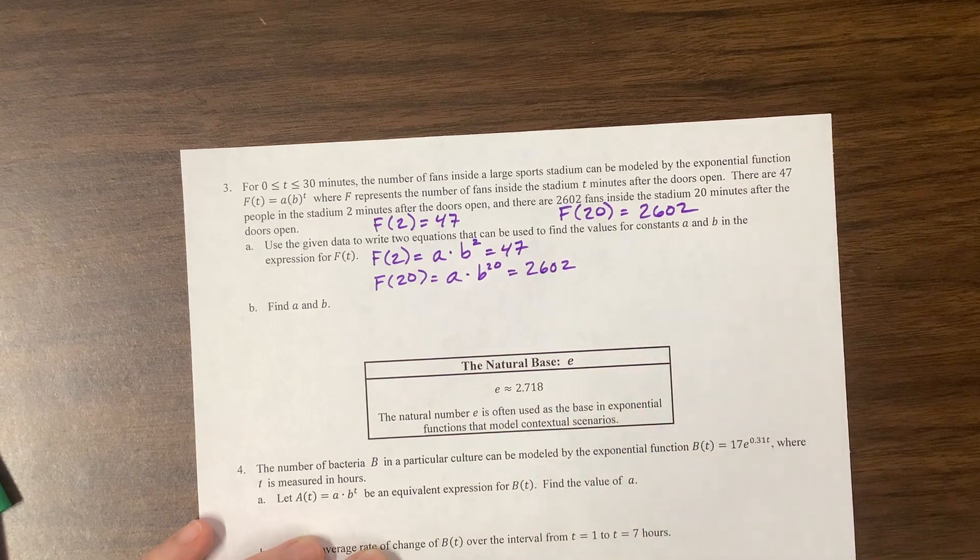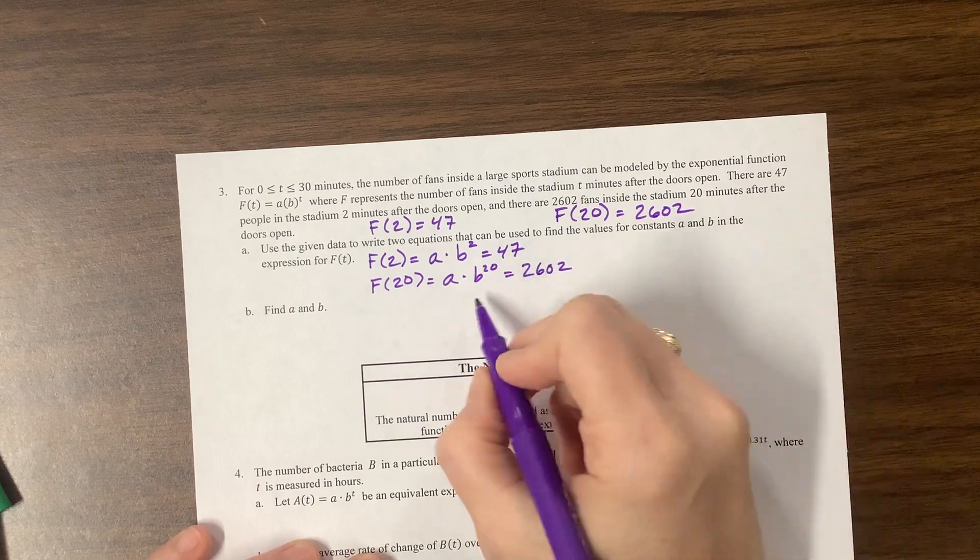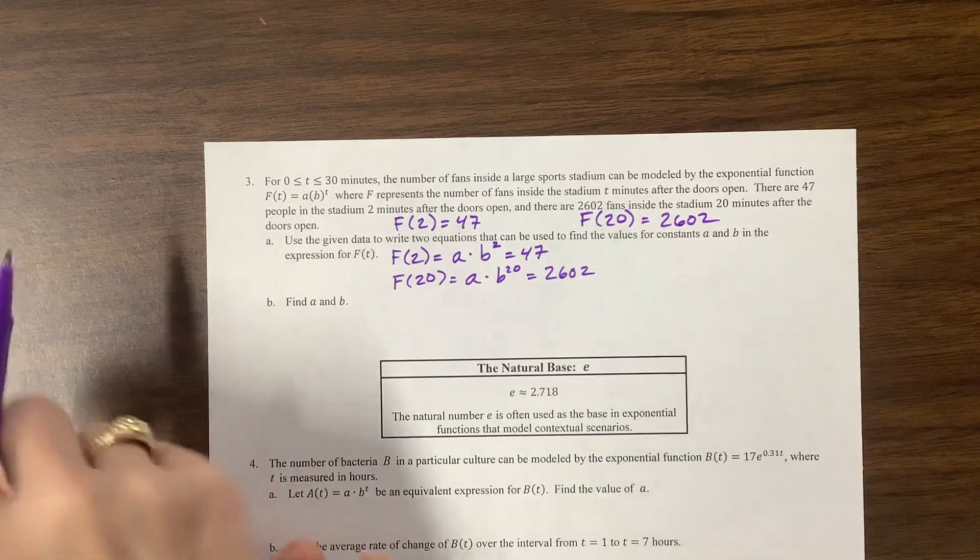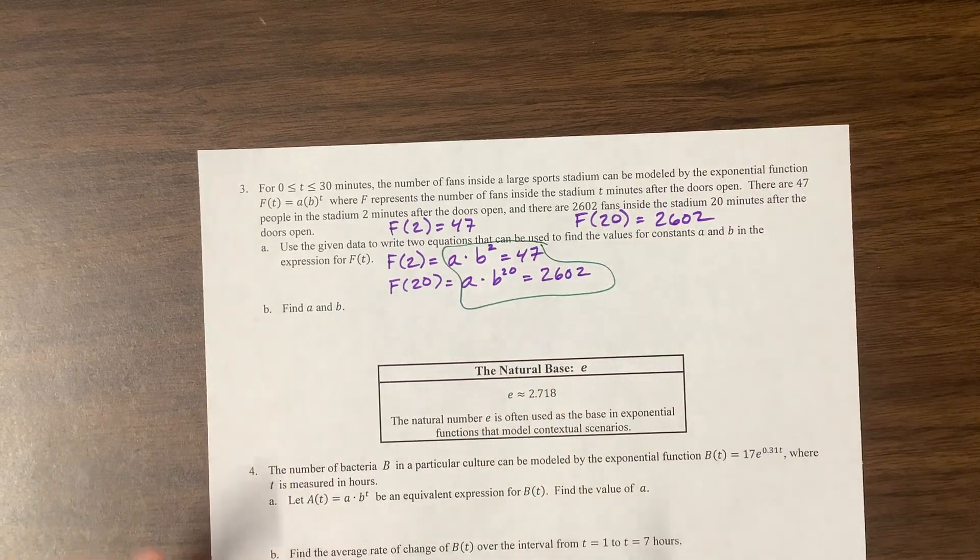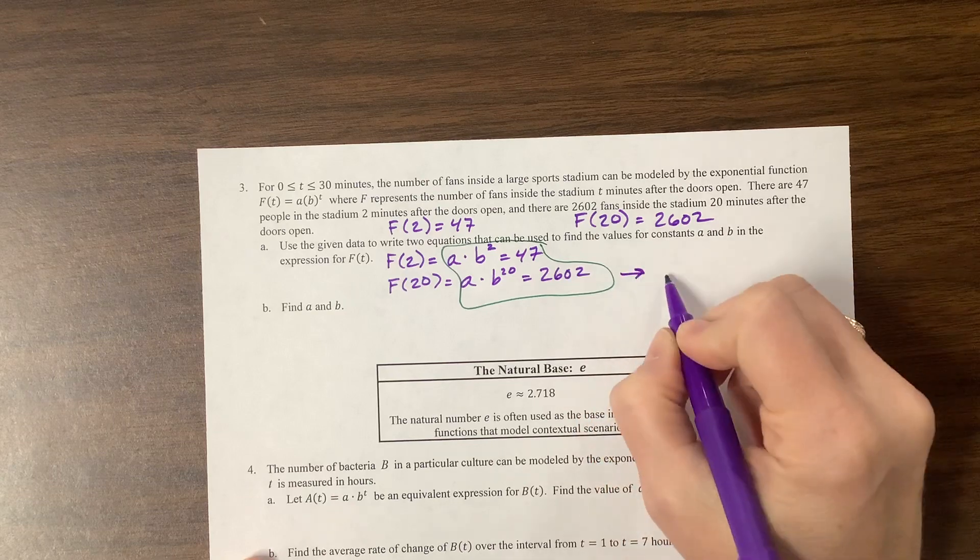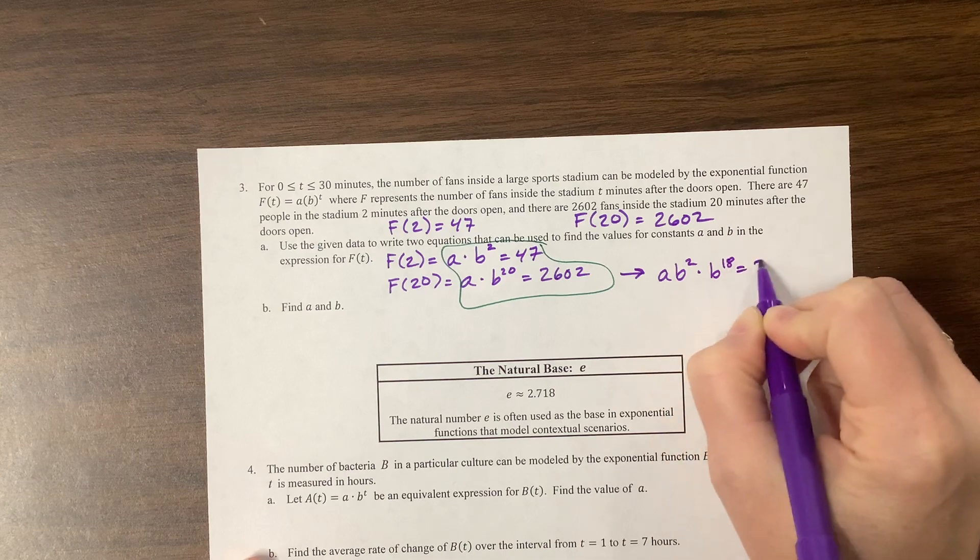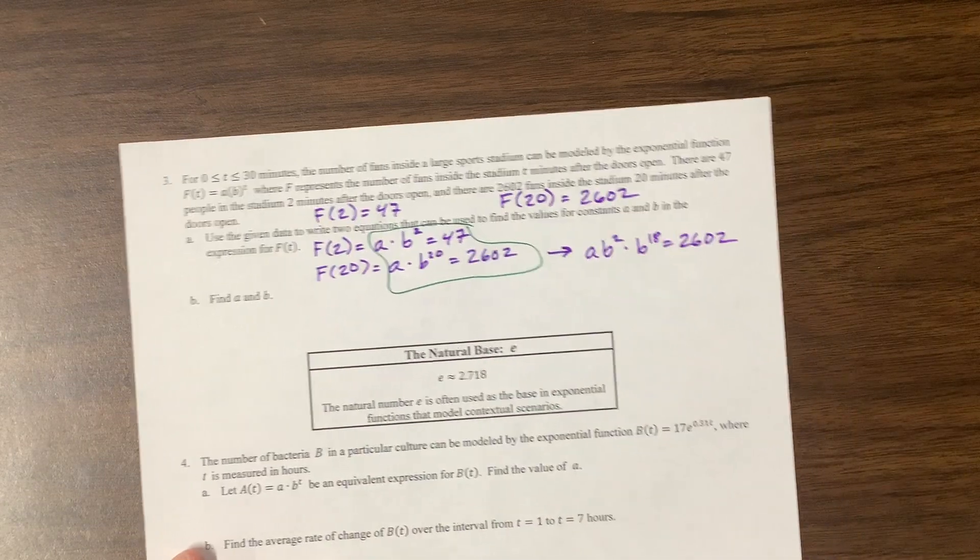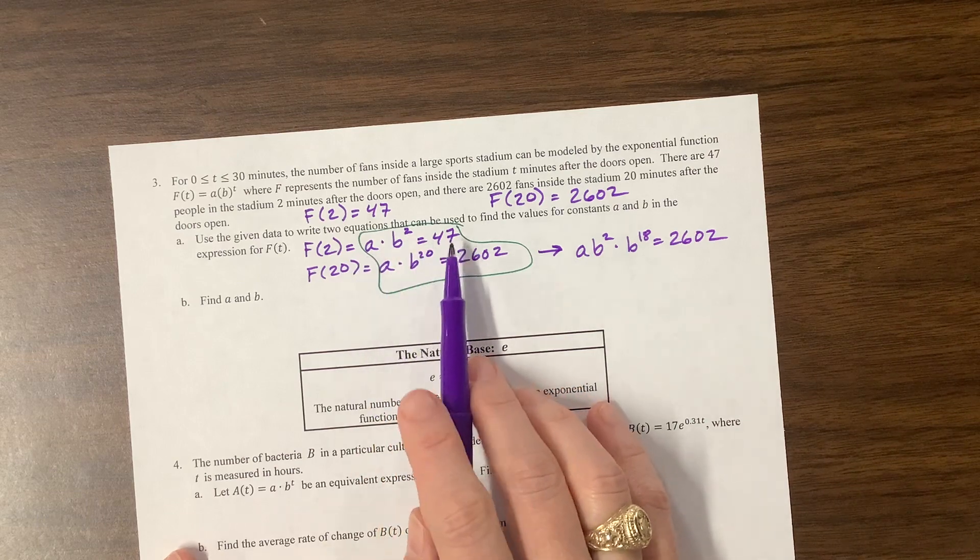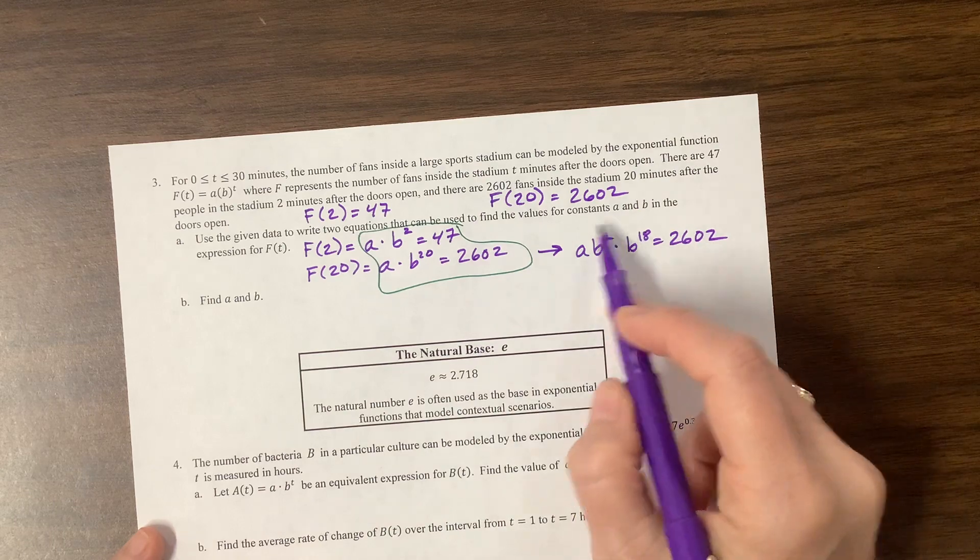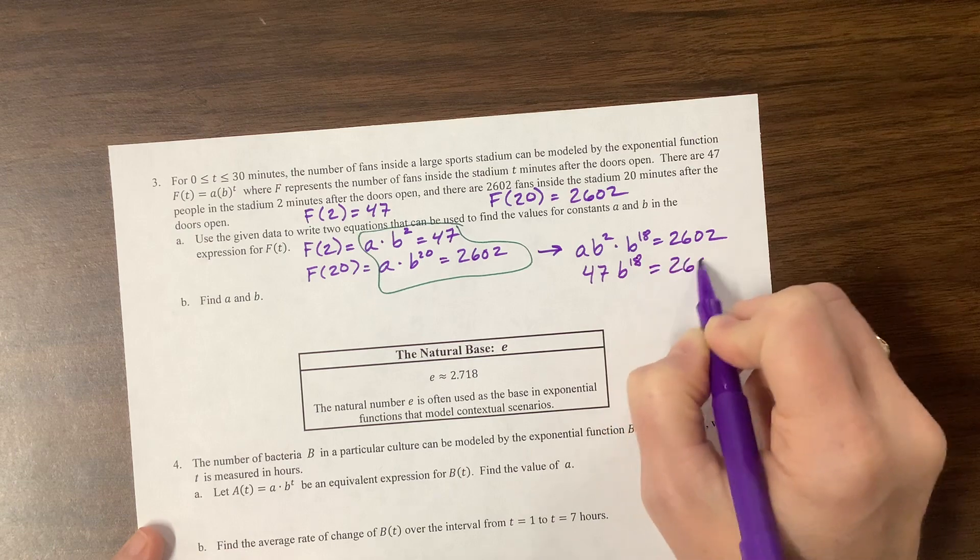Okay. So what I might do in this particular problem is, well, we can rewrite. So here, these technically are my two equations. It's this equation and that equation. Okay. Aren't they lovely? What I know is that this one can be written as A B squared times B to the 18 is equal to 2602. And the reason that I broke it apart like that is because I already know that A times B squared is equal to 47. So it's kind of a weird form of substitution where I can take this out and say, this is 47 B to the 18th is equal to 2602.